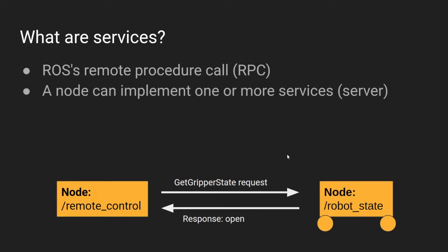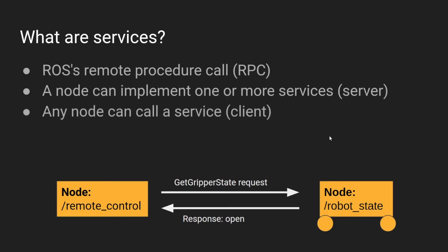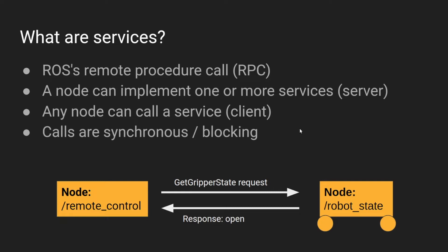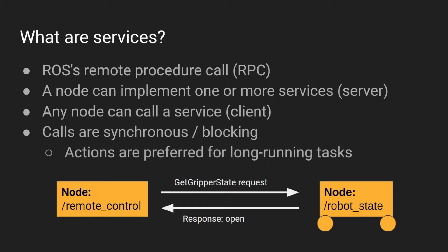A node can implement one or more services at the same time — we call this the server. Any other node can see and call that service, making it a client. An important thing to know is that a service call is blocking: the client has to wait for the server to finish computation and send back the response, and while waiting it can't do anything else — it can't even process topic subscriptions. For long-running tasks, you should use a ROS action instead, such as telling the robot to navigate somewhere, which will be covered in another video.